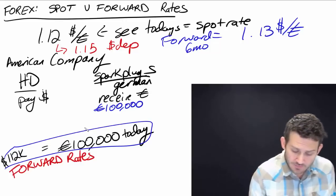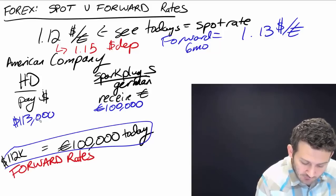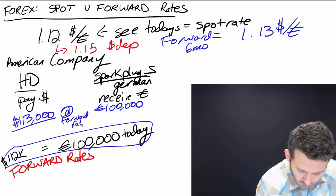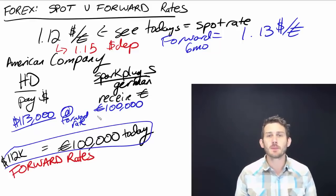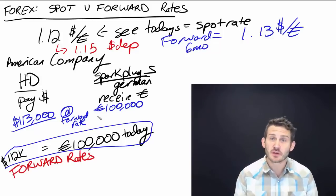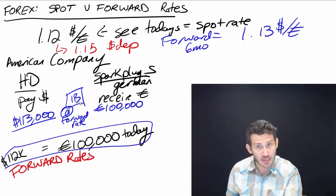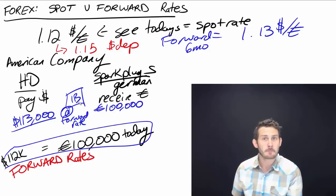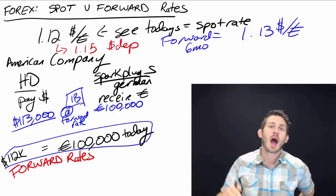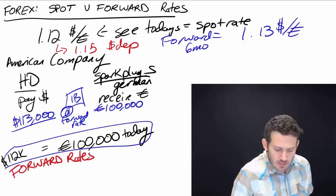I'm going to lock in this forward rate at $1.13. That means it's going to cost me 113,000 dollars. I enter into this agreement with an investment bank in the middle — I exchange 113,000 dollars for 100,000 euros in six months with the investment bank. Then I take that 100,000 euros and pay off the spark plugs. I know exactly how much I'm going to be paying right now when I enter into this contract.